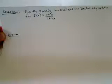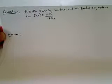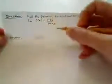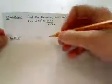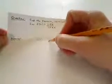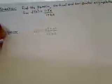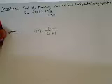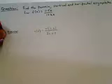First, I would rewrite this fraction in descending order. So f(x) equals negative 5x plus 1 in the numerator, divided by 2x plus 1 in the denominator. This way the numerator is in descending order, and the denominator is also written in descending order.